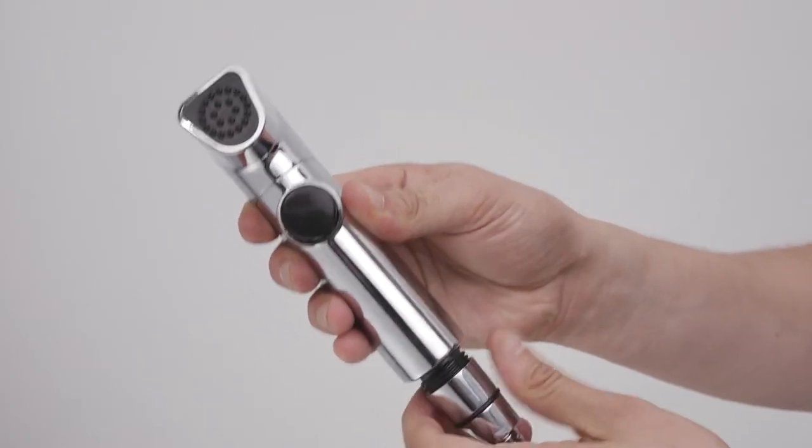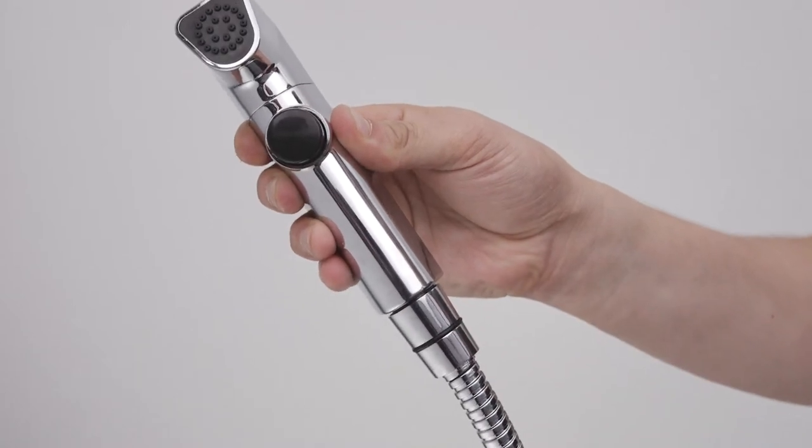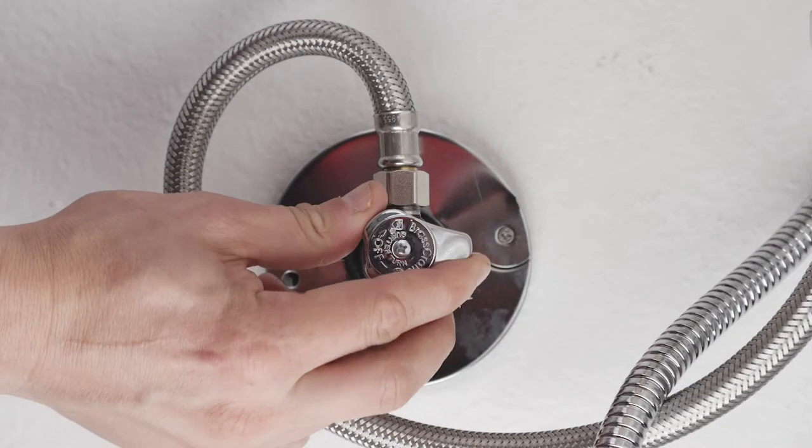Connect the bidet spray head to the open end of the bidet hose. Turn on the water supply and check for leaks.